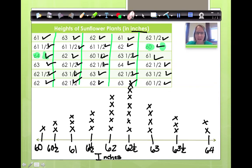Now that we have it plotted, we can answer some questions. So what's the most common height of sunflowers? Clearly the most common height is 62 and a half inches. What's the least common height? Well, the only one is this, and that's 60 inches.